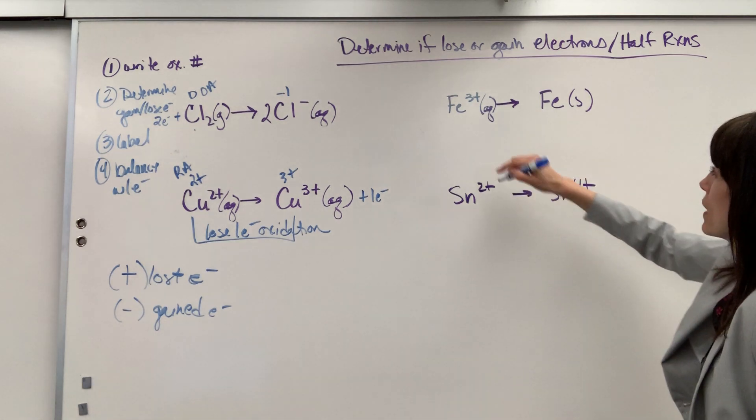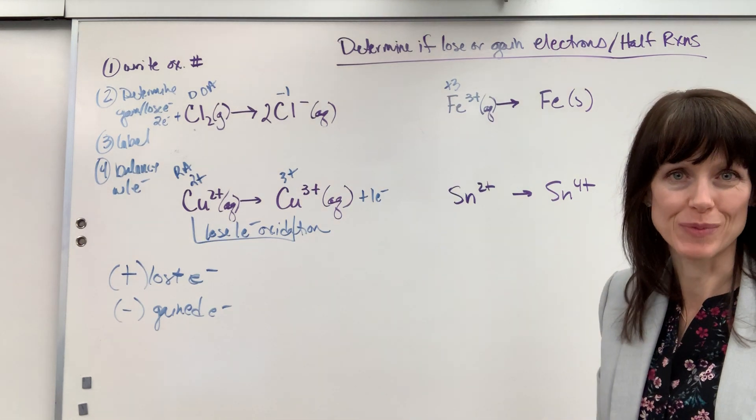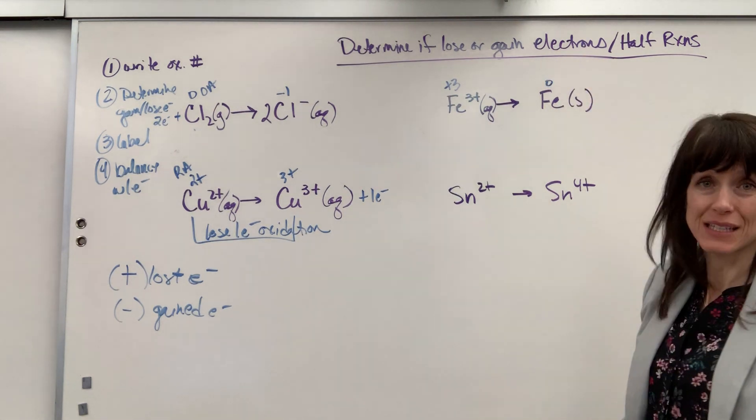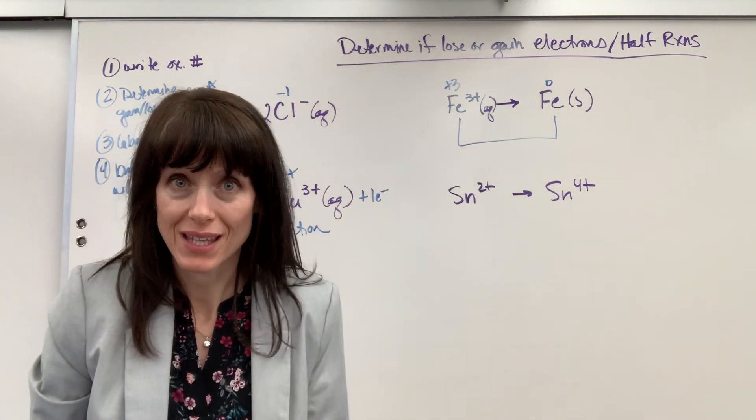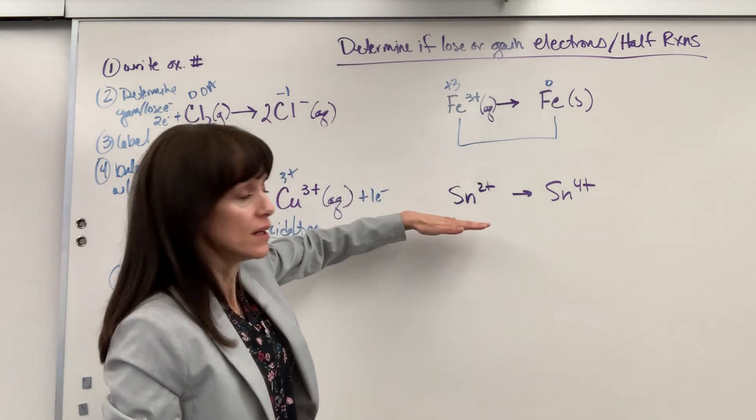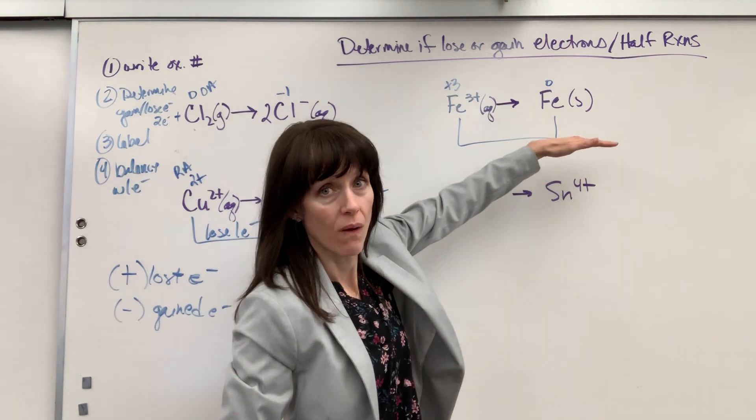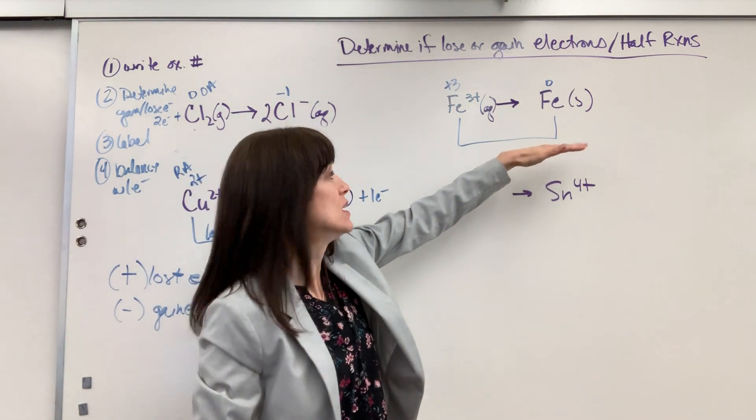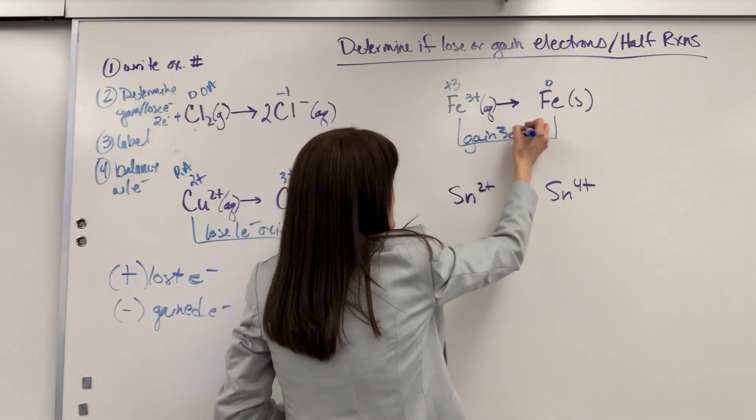Okay, let's come over here. Oxidation number on iron three plus. Charge is the same as the oxidation number. So it's going to be our three plus iron solid. This is zero. Let's draw a bracket. Okay, what's happening? Gaining or losing electrons? So here I'm down by three. Okay, so I'm down by three electrons and we end at a zero. So that means we had to gain three electrons to get to that perfect zero. So we had to gain three electrons.